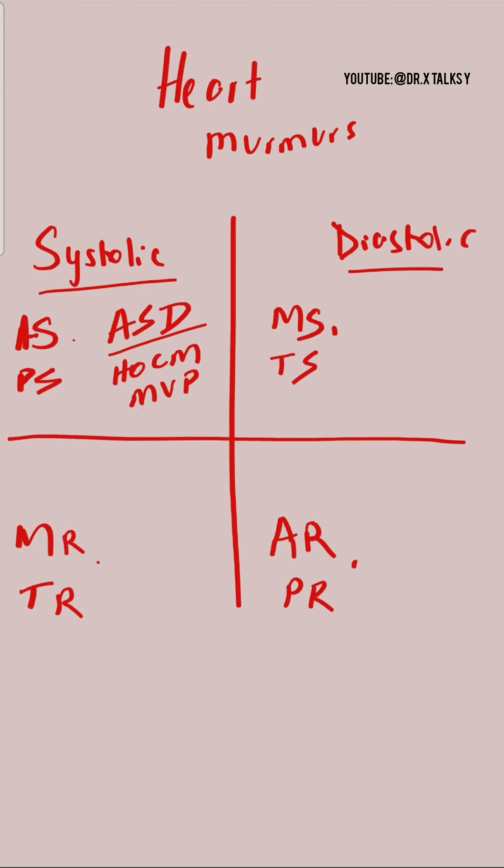HOCM and MVP are special in the sense that they have a completely different response to squatting and Valsalva maneuvers. On the lower left side, similar to how we added ASD on the top, we can write VSD on the bottom.